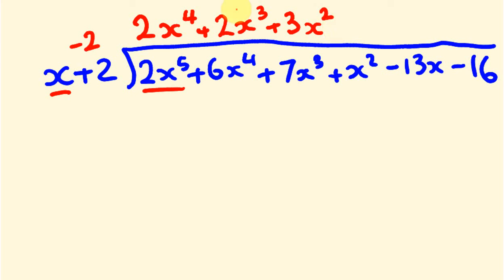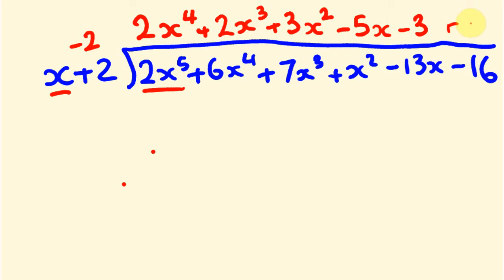Next, minus 2 times 3x squared is minus 6x squared, plus x squared is minus 5x squared — so we drop the power and write minus 5 for the x term. Then minus 2 times minus 5x is positive 10x, plus minus 13x is minus 3x, so we write minus 3 as our constant term. Our remainder is minus 2 times minus 3, which is 6, plus minus 16 gives us a remainder of minus 10. Wait — actually 6 plus minus 16 is minus 10, so our remainder is minus 10.